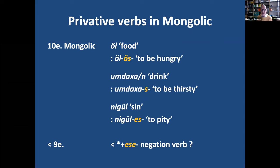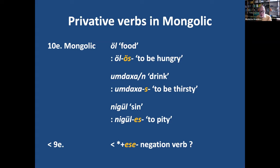Now we have my actual theme: a few verbs in Mongolian which contain the element *-s* — with or without a preceding vowel — meaning 'to lack something'. We have the noun *öl*, 'food', and *ölös*, 'to lack food', that is 'to be hungry'. Similarly, *umdahas*, 'to lack drink', meaning 'to be thirsty'. And at least one more: *nigul*, 'sin', but *nigüles* means 'to pity, to have compassion' — which I think can only be explained from the idea that you are without sin. So we have these verbs in which *-s* functions as a privative derivative suffix.